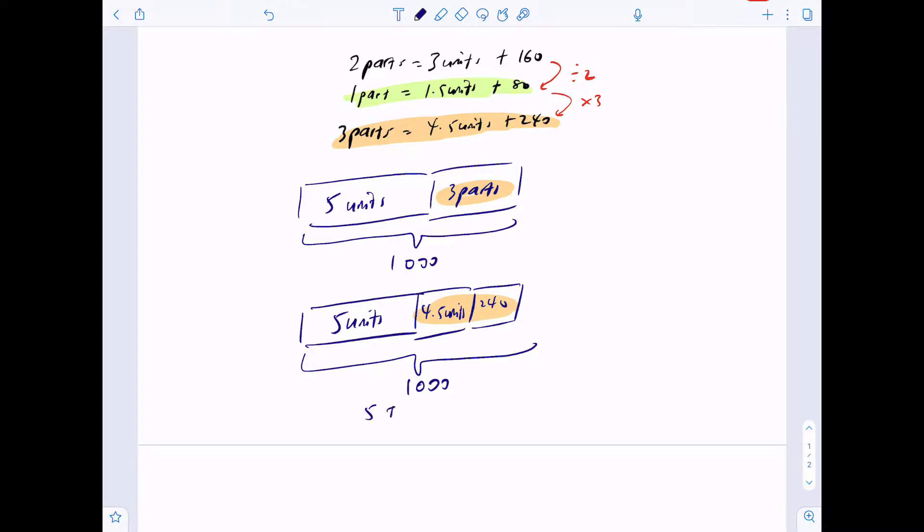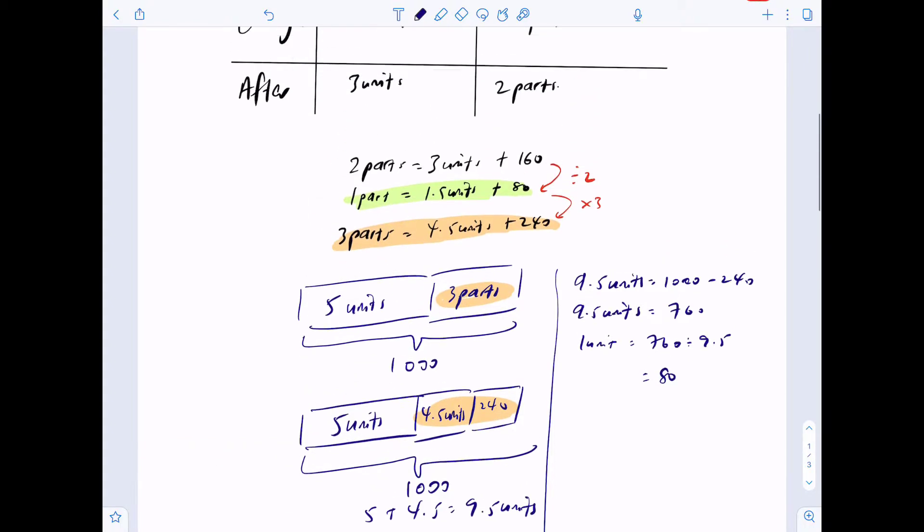Five plus 4.5, that is 9.5 units. What is the value attached to 9.5 units? That would be 1,000 take away 240. 9.5 units will be equivalent to 760. We can then find what one unit is worth: 760 divided by 9.5 is 80. One unit is worth 80.